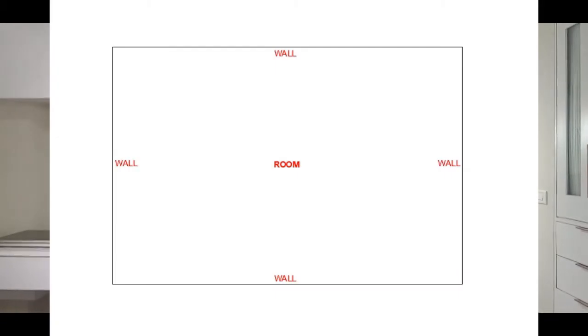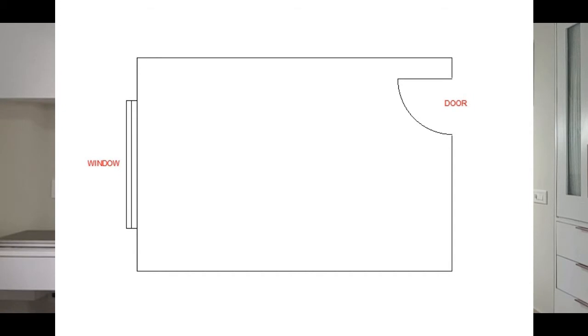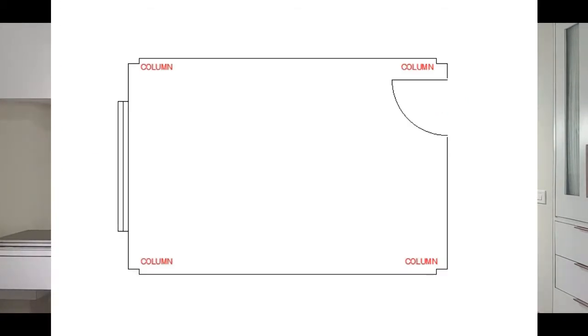You have to start by making a sketch of the room. Assume your room is a rectangle, so sketch a rectangle. Put in the positions of the door and the windows wherever they are, and if there are any column projections, please mark those as well.